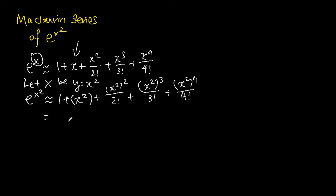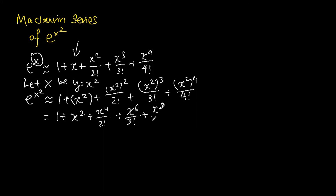This simplifies to 1 plus x squared plus x to the power of 4 over 2 factorial plus x to the power of 6 over 3 factorial plus x to the power of 8 over 4 factorial. And this is the solution to the Maclaurin series of e to the power of x squared.